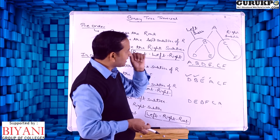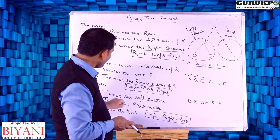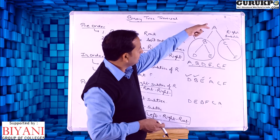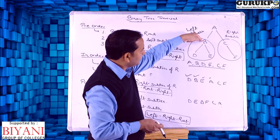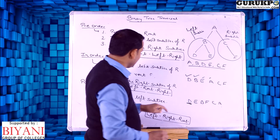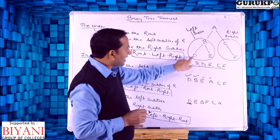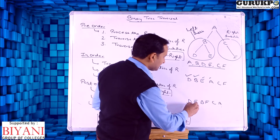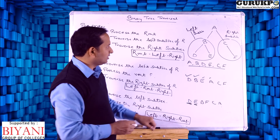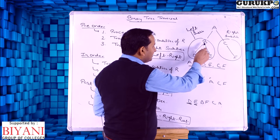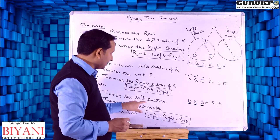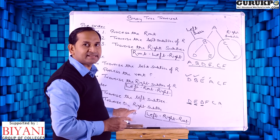Now taking the same example again — first we traverse the left subtree. The left of root is B, and the left of B is D, so first we traverse D. Then we traverse the right — the right of B is E — so we traverse E. After left and right we traverse the root; the root of D and E is B, so we traverse B. This completes the left subtree.